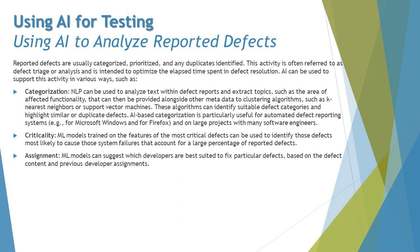Similarly, criticality can be addressed with the help of AI. ML models trained on the features of the most critical defects can be used to identify those defects most likely to cause system failures that account for a large percentage of reported defects. They can easily categorize those items under the critical category so that the team can take necessary and appropriate actions.